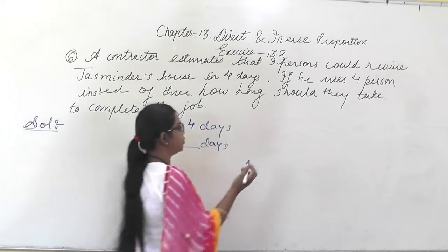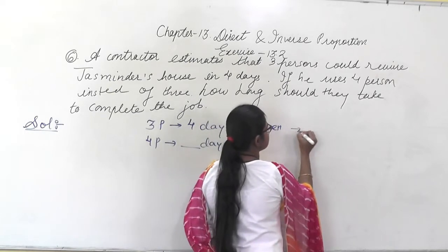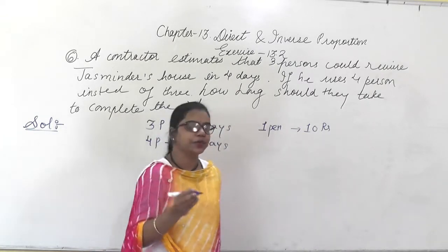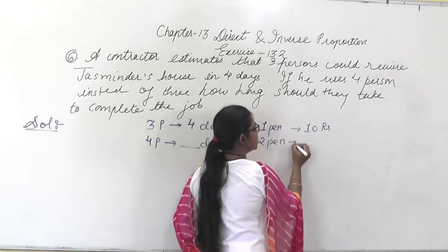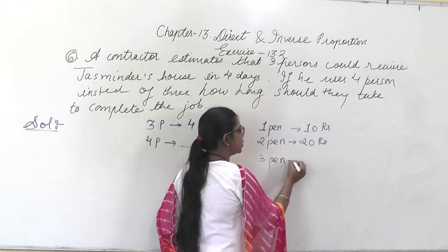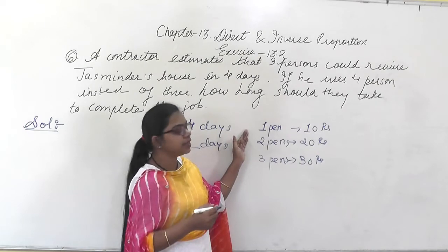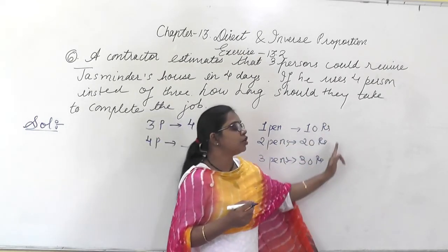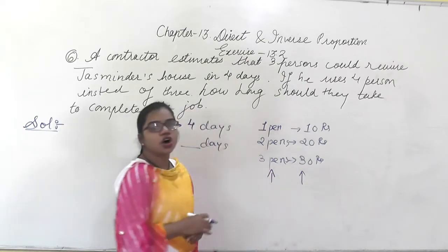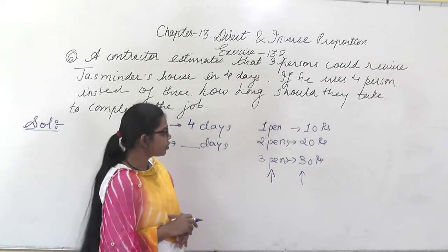Let me give you an example. Suppose 1 pen costs 10 rupees. If you take 2 pens, it will cost 20 rupees. If you take 3 pens, it will cost 30 rupees. So here, as you increase the number of pens, the cost is also increasing — both quantities are increasing together. So this is in direct proportion.